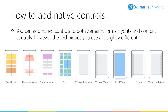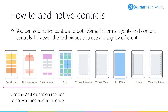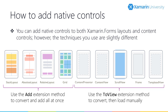We can do this conversion using extension methods that are provided in Xamarin Forms. There's an Add extension method that allows us to add a native control directly into a Xamarin Forms layout — it does both the conversion and adds the native control in one step. There is also a ToView extension method, which can be used to convert a native control to a Xamarin Forms view, and it's then up to you to add the control to your UI. This technique allows for greater flexibility, as we'll see shortly.